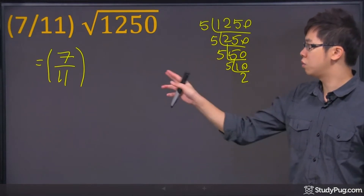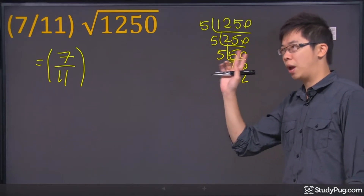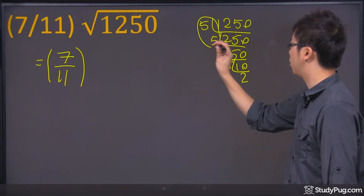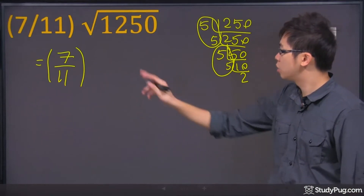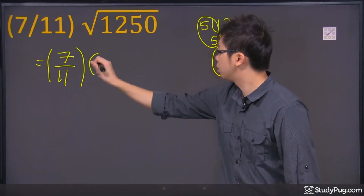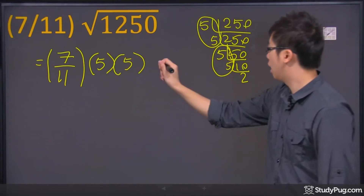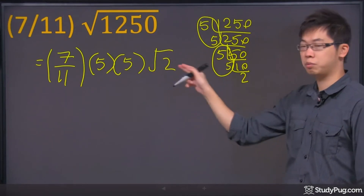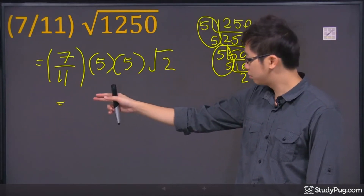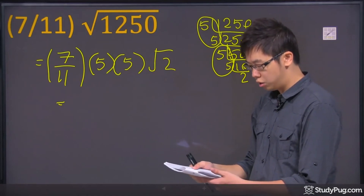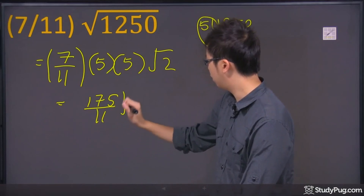The trick is, if you're doing the square root, that means the root number is 2. So for every pair of identical numbers — in this case, we have a pair of 5s and another pair of 5s — they can be taken out from the radical sign and put in the front. So now we have a 5 in the front from the first pair, and another 5 from the second pair, and we're just left with the 2 inside the radical. Working out the math: 7 over 11 times 5 times 5 times √2 gives you 175 over 11, times √2.